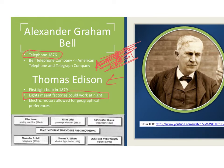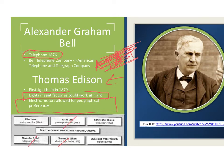Electric motors are also important — they allow you to put a factory or plant in places other than just close to rivers or a coal supply. Edison is also known for his electric motors and power stations to supply electricity from city to city. Other notable inventions include the electric typewriter, electric sewing machine, the passenger elevator, and airplanes.